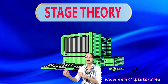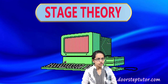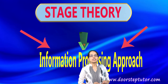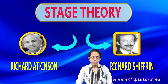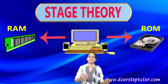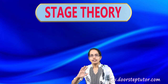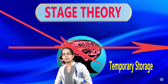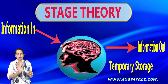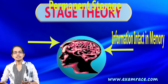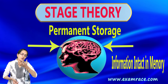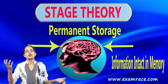This works very similar to a computer system as given under the stage theory, also known as the information processing approach. This model was given by Atkinson and Shiffrin. In this theory, they laid down that in a computer you have RAM and ROM, which is temporary and permanent storage. Similarly, in your brain you have temporary and permanent storage units. This whole model compares a computing system to a human brain.